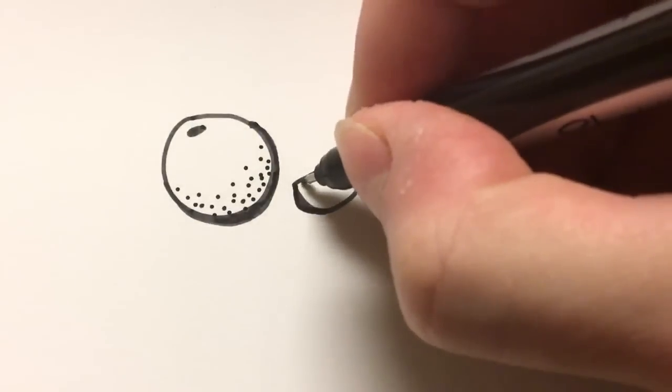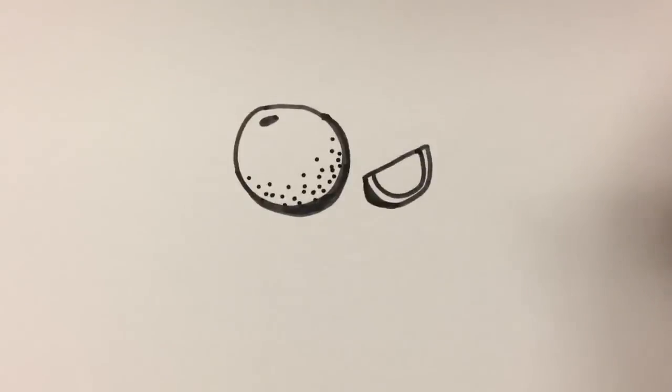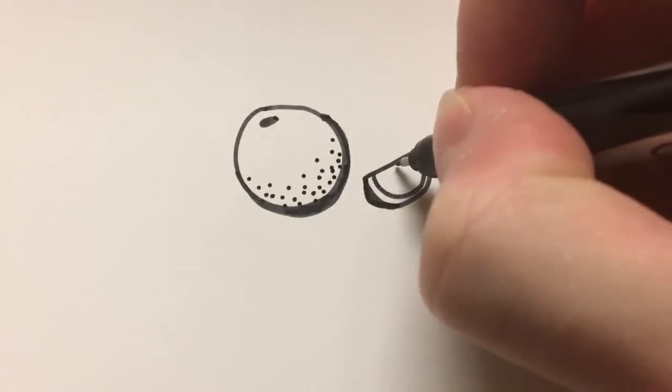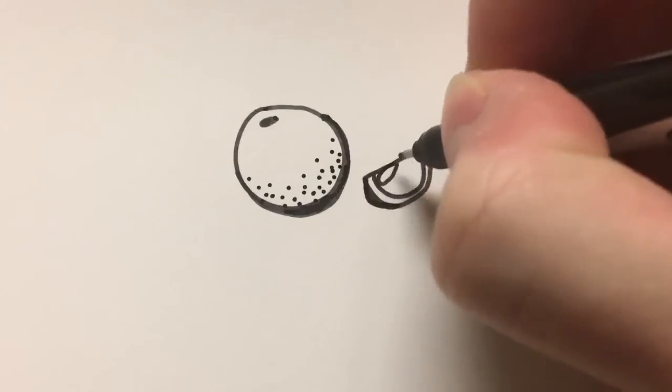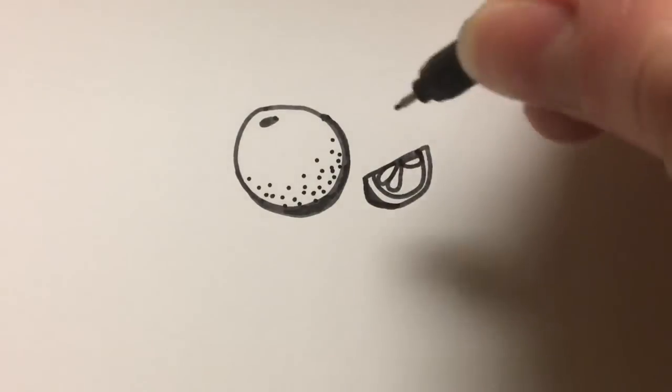Now I'm going to add the rind—another curve on the inside there. Then as many as you can fit, just a few little inside slices.